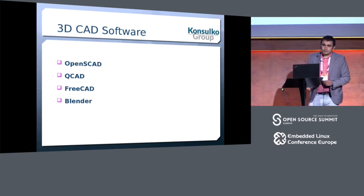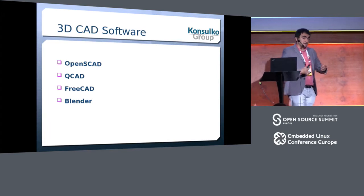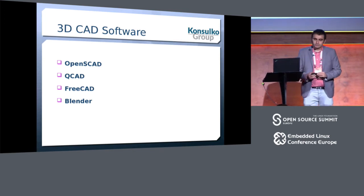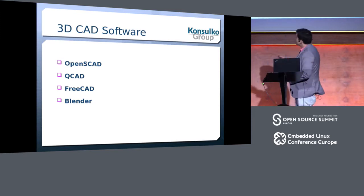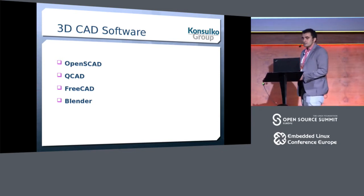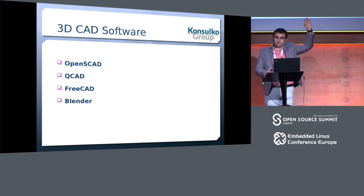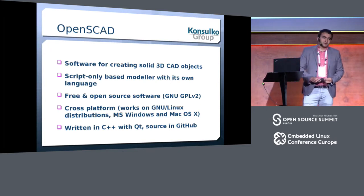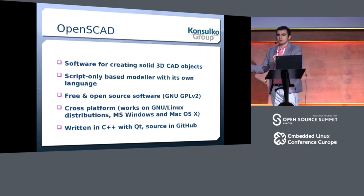Now we're entering the part of the presentation about 3D CAD software for making physical objects like cases. I've selected some free and open source software tools I believe are popular for designing 3D objects that can then be 3D printed: OpenSCAD, QCAD, FreeCAD, and Blender. OpenSCAD is my personal favorite — every developer should love this project because on one side of the screen you write code and on the other side you see a physical object. Isn't that gorgeous?